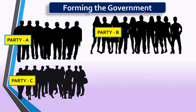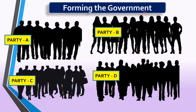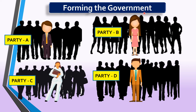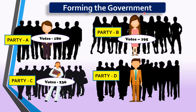Here in India, we have many political parties. During elections, they file their candidate who represents their party. And then during elections, we voters who are 18 years or above 18 years — those who are citizens — go and vote. And the party who gets maximum votes gets the chance to form a government.